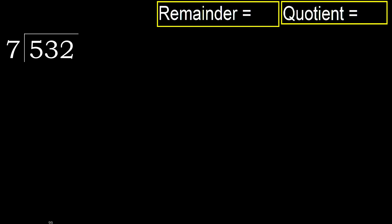532 divided by 7. 5 is less than 7, therefore next. 53 is not less, therefore we work with 53.